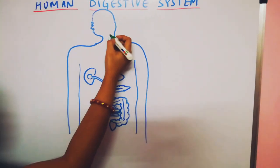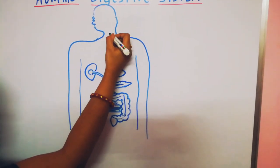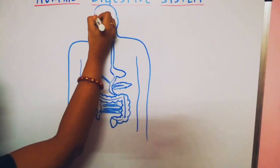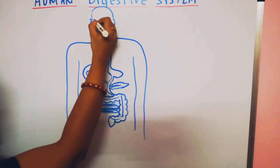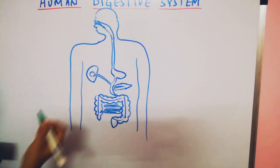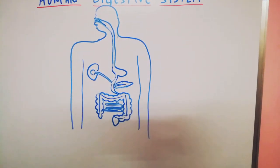And then join this tube, which is called as esophagus, to the mouth part. Now your digestive system is ready.